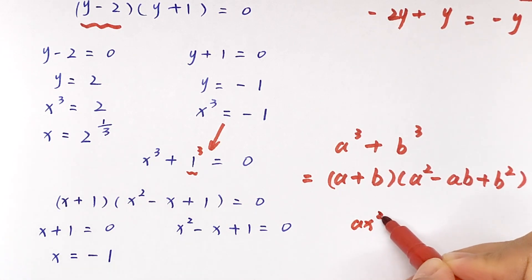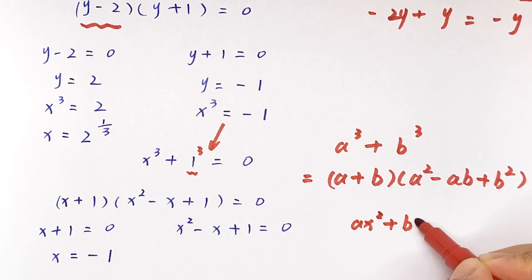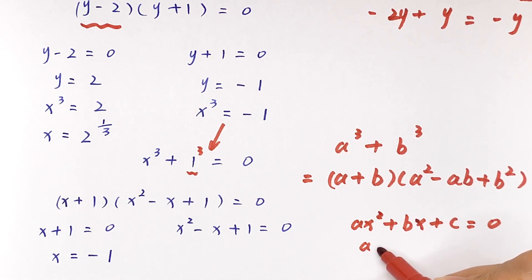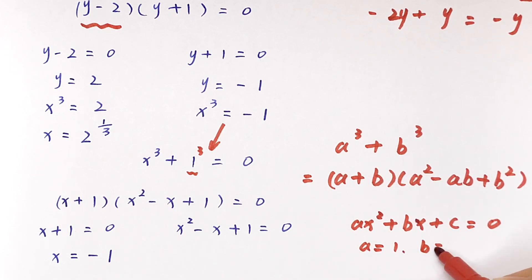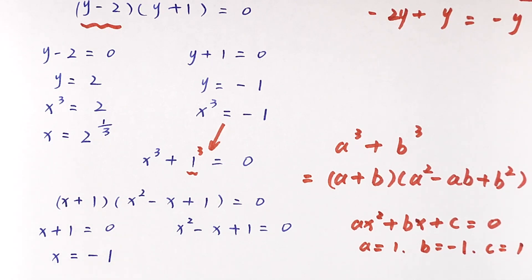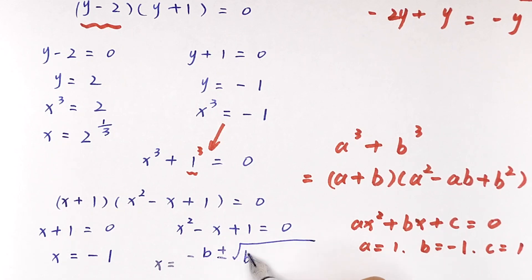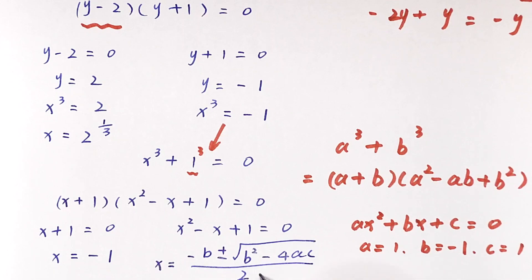Using the standard form ax squared plus bx plus c equals 0, we identify a equals 1, b equals negative 1, and c equals 1. Applying the quadratic formula: x equals negative b plus or minus square root of b squared minus 4ac, all over 2a.